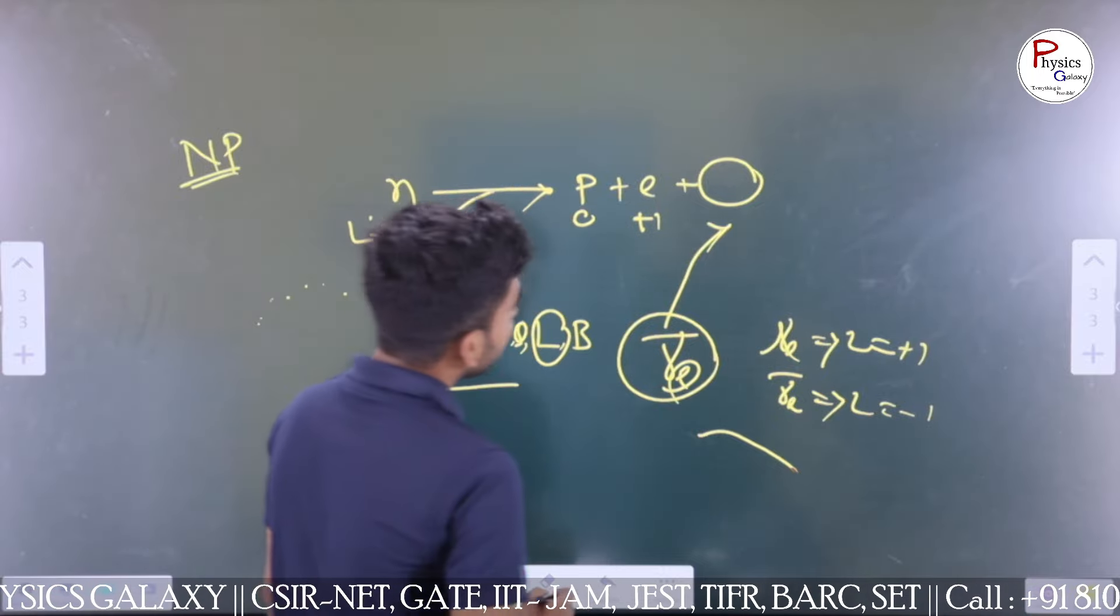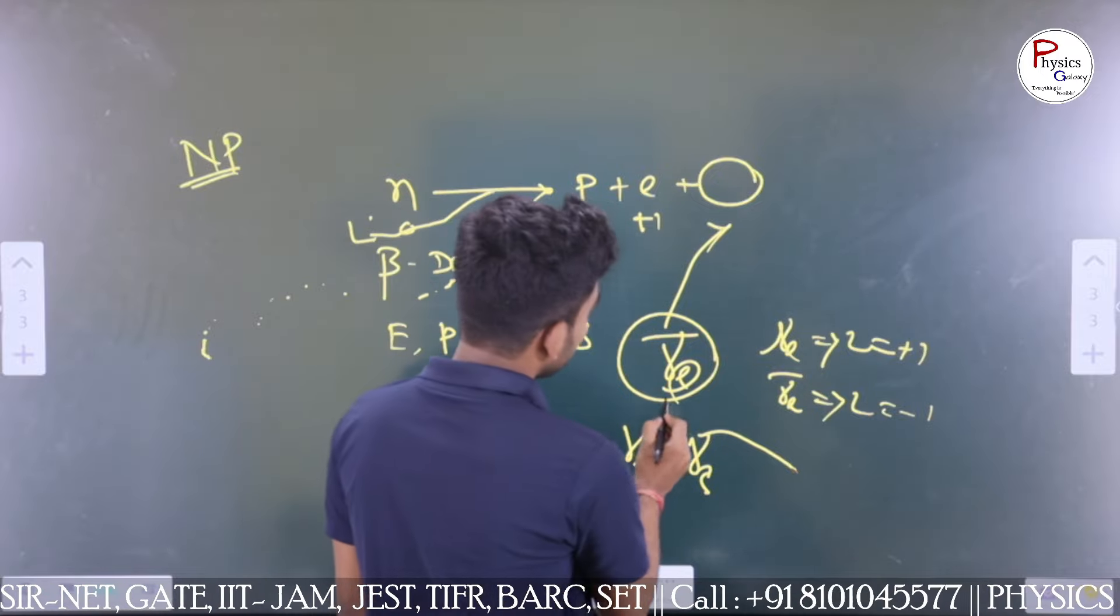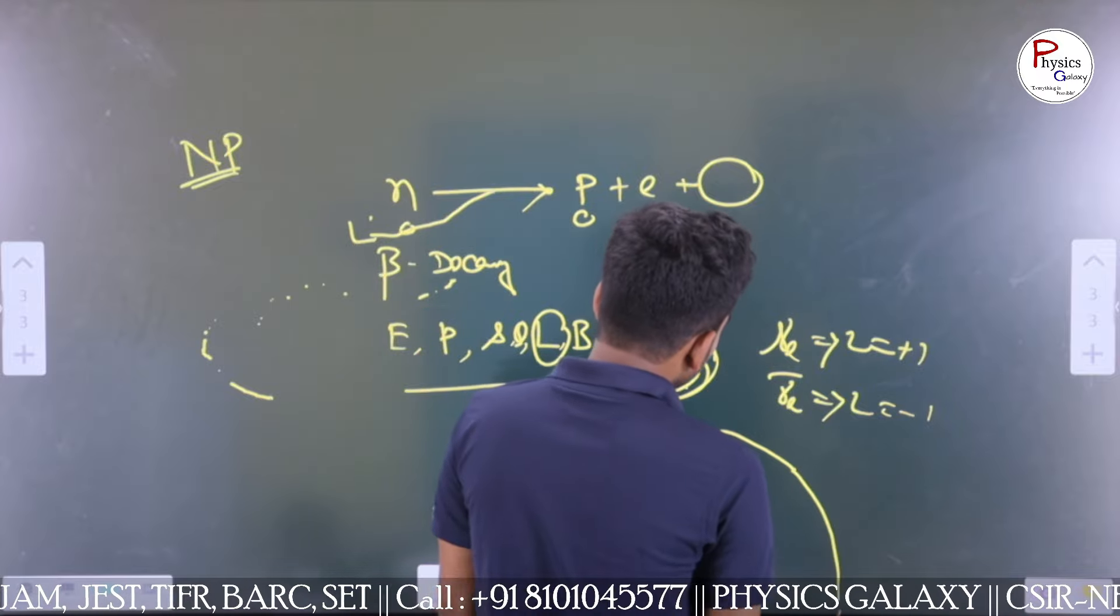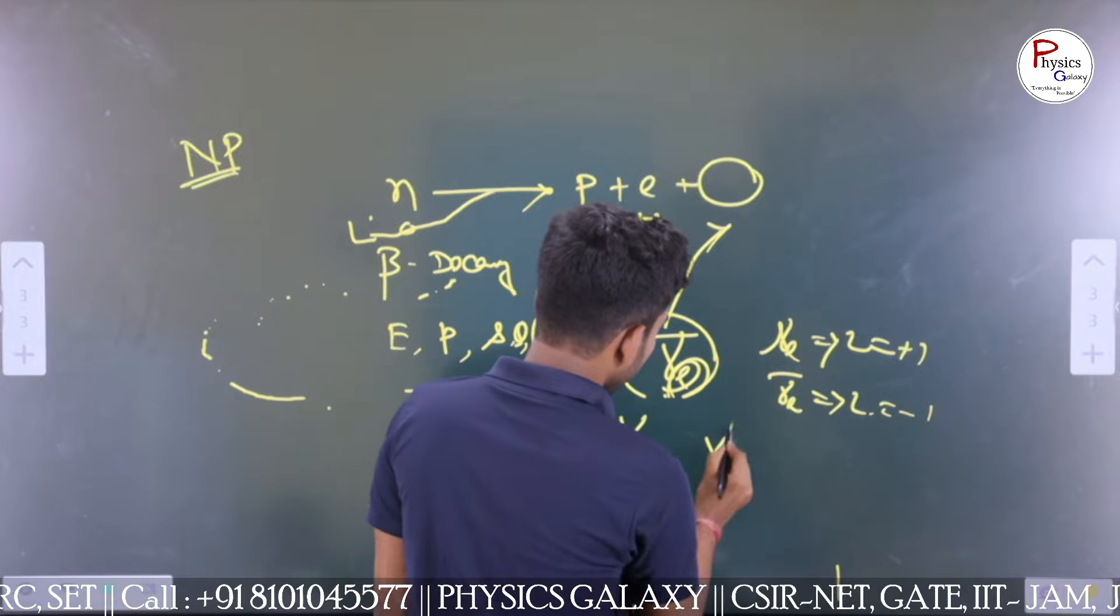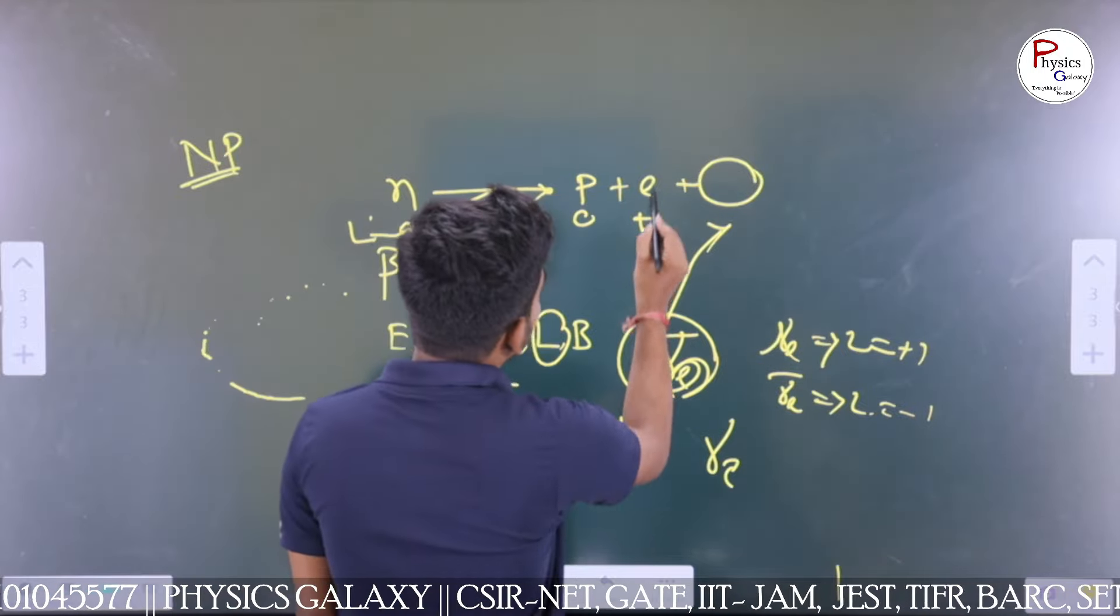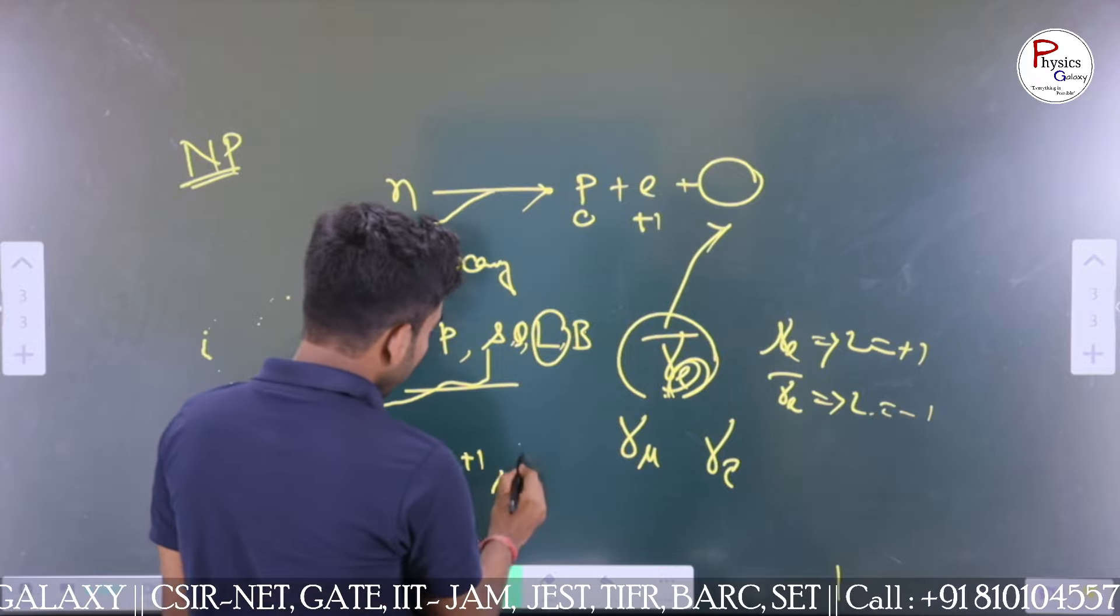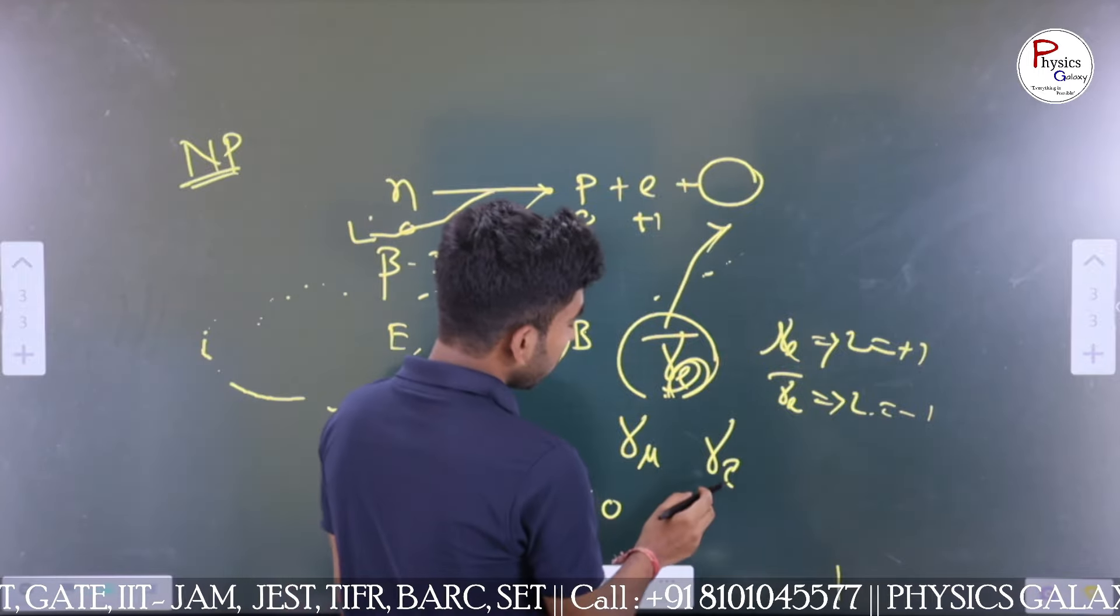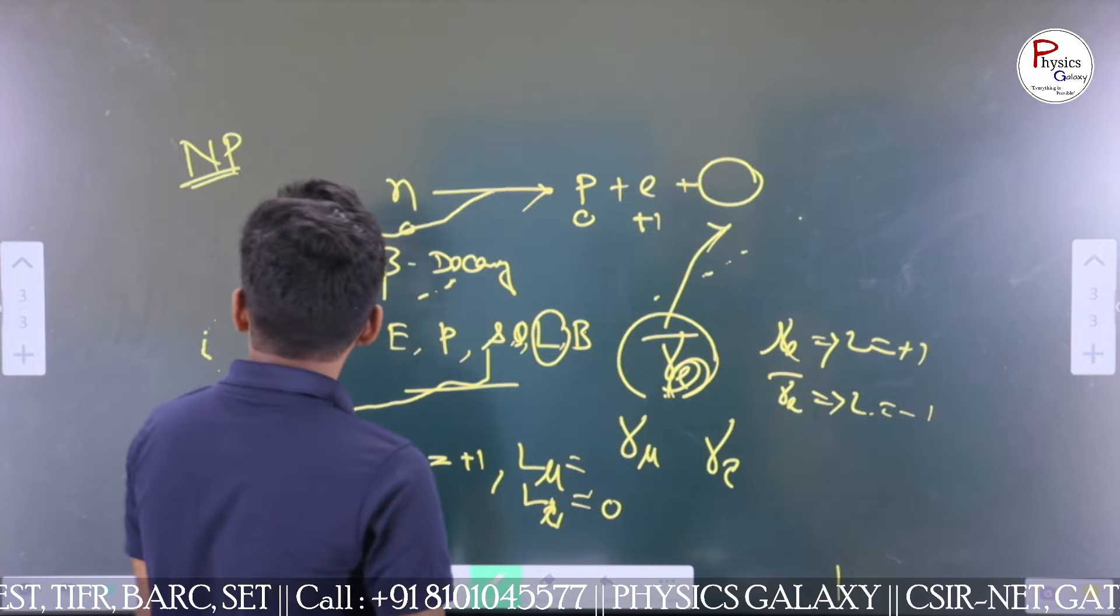Then they asked why we choose electron neutrino. There are some other neutrinos like mu neutrinos and tau neutrinos. So why is this electron neutrino? Then I told that there are lepton families, so we should conserve the family-wise lepton number. Here, as there is an electron, its electronic lepton number is plus one. But mu neutrino and tauonic lepton number is zero. If we introduce mu neutrino or tau neutrino, the family electron number is not conserved.